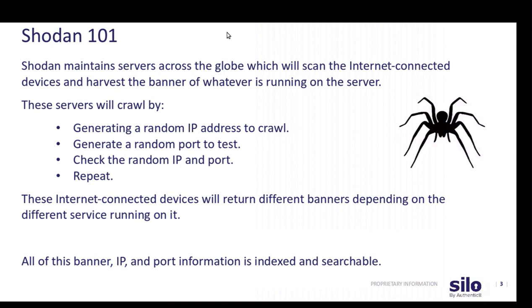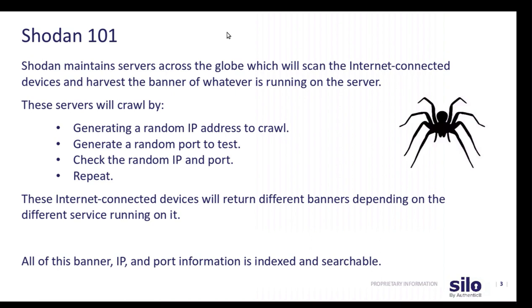How Shodan is collecting all this information and indexing these devices is through what's called crawlers. The crawler is going to generate a random IP address, then a random port to test, and it will check that random IP and port. This process is repeated. These crawlers operate out of web servers that Shodan maintains across the globe, and the internet-connected devices it crawls and scans will return different banners depending on what services are running. All of this information — the banner, the IP, port information — is indexed and searchable.